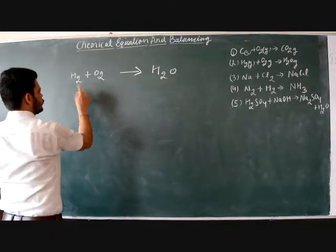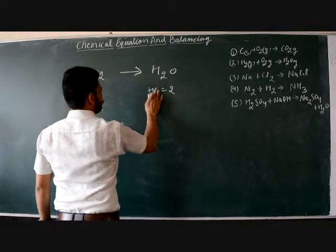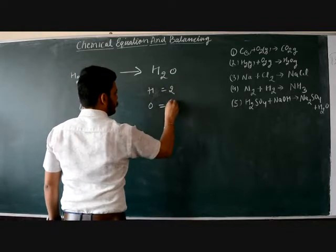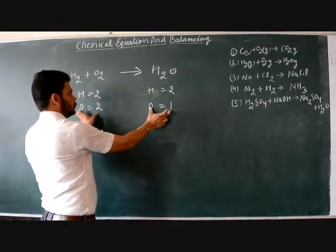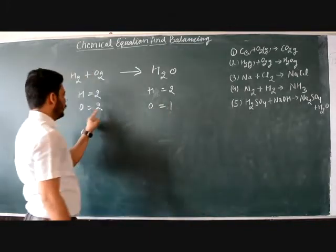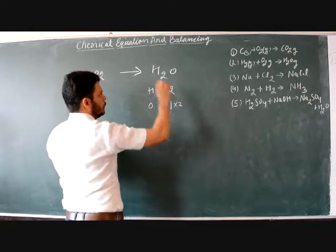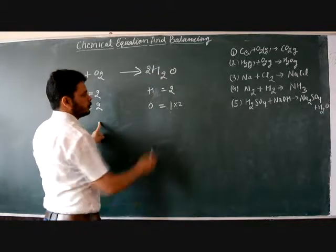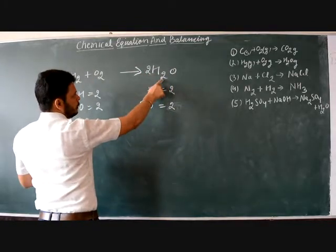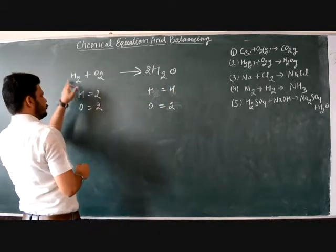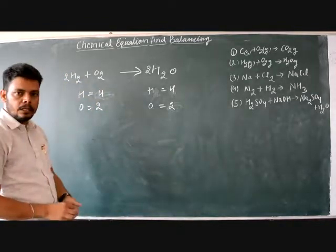Start by counting atoms. On the left: H = 2, O = 2. On the right in H₂O: H = 2, O = 1. So oxygen is unbalanced — 2 on the left and 1 on the right. To balance oxygen, multiply H₂O by 2. Now O = 2 on both sides, but H on the right has become 4. To balance hydrogen, multiply H₂ by 2 — always write the coefficient in front, never change the subscript. Now H = 4 on both sides. The equation is balanced: 2H₂ + O₂ → 2H₂O.